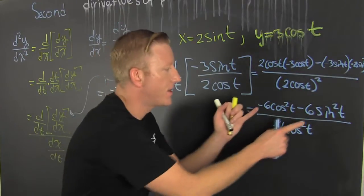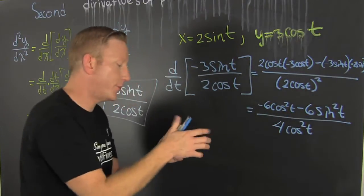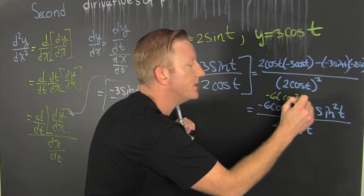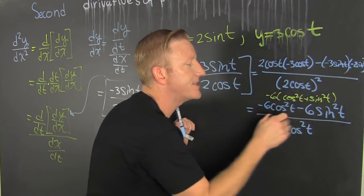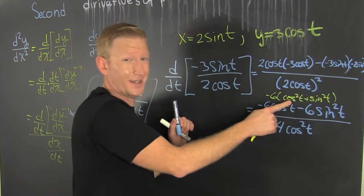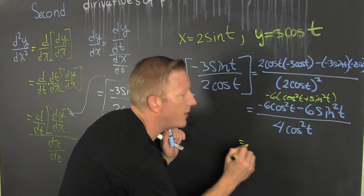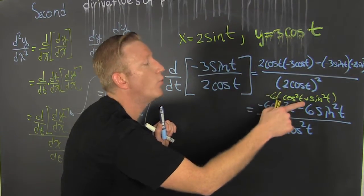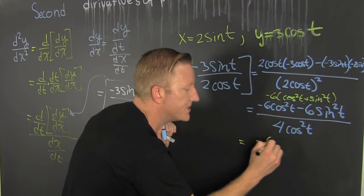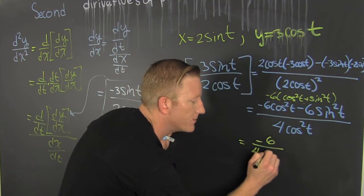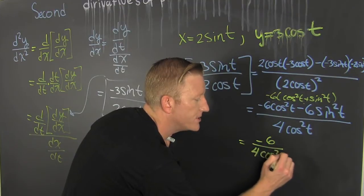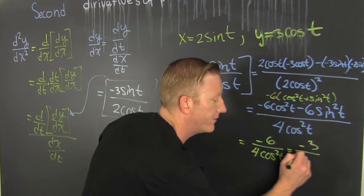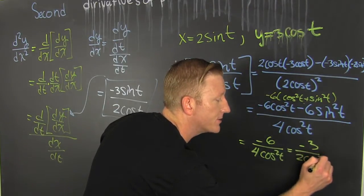We can factor out a minus 6, giving us minus 6 times the quantity cosine squared t plus sine squared t — and that's the only trigonometric identity you've ever remembered. That equals 1, so we get minus 6 over 4 cosine squared t, which reduces to minus 3 over 2 cosine squared t.